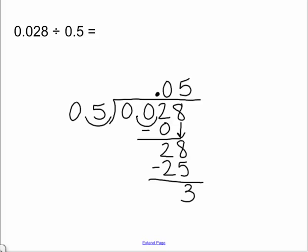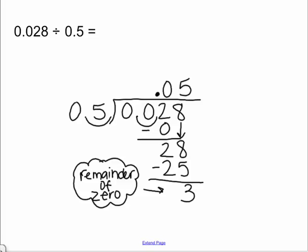Now, you must keep going until you get a remainder of 0. A remainder of 0 is the goal. Therefore, we must keep going. Because it's a decimal, we can add zeros to the end and it will not change the value of the dividend.